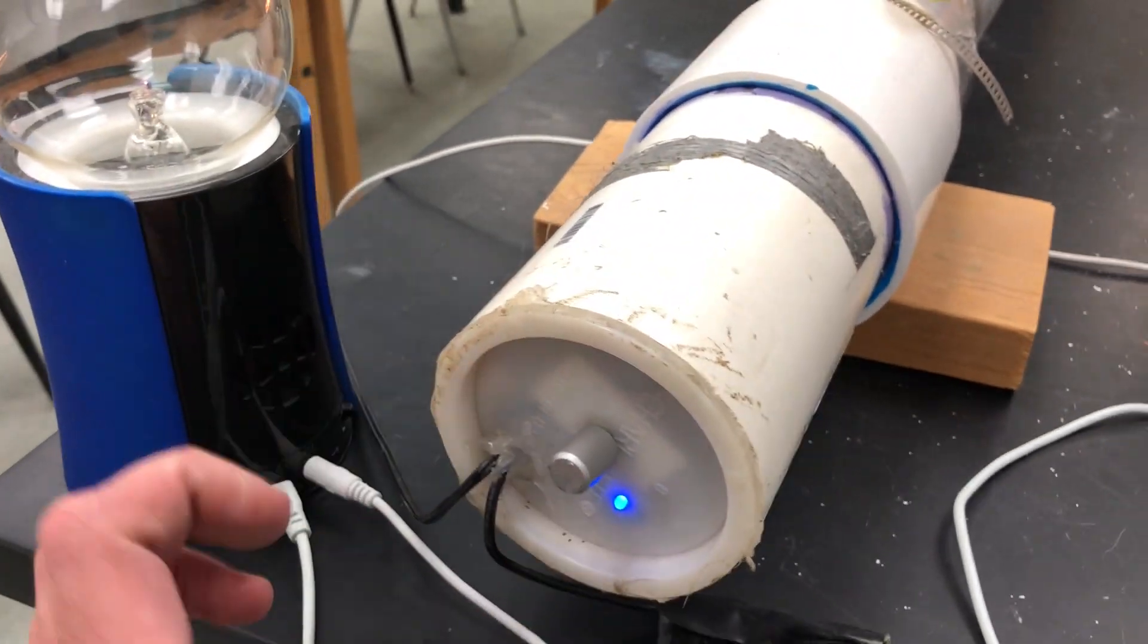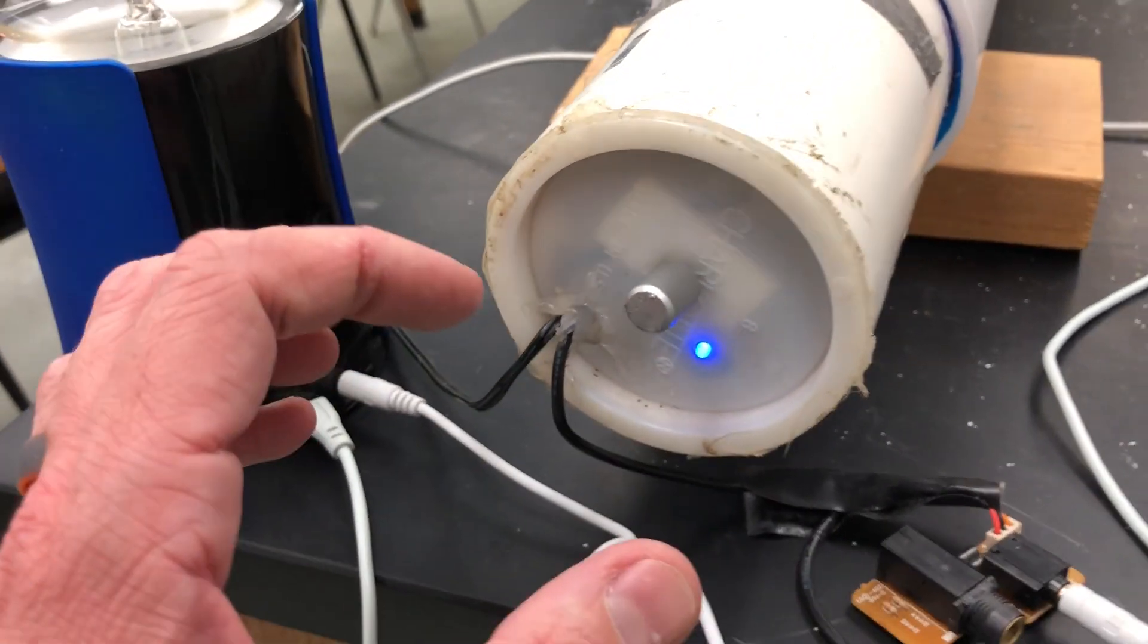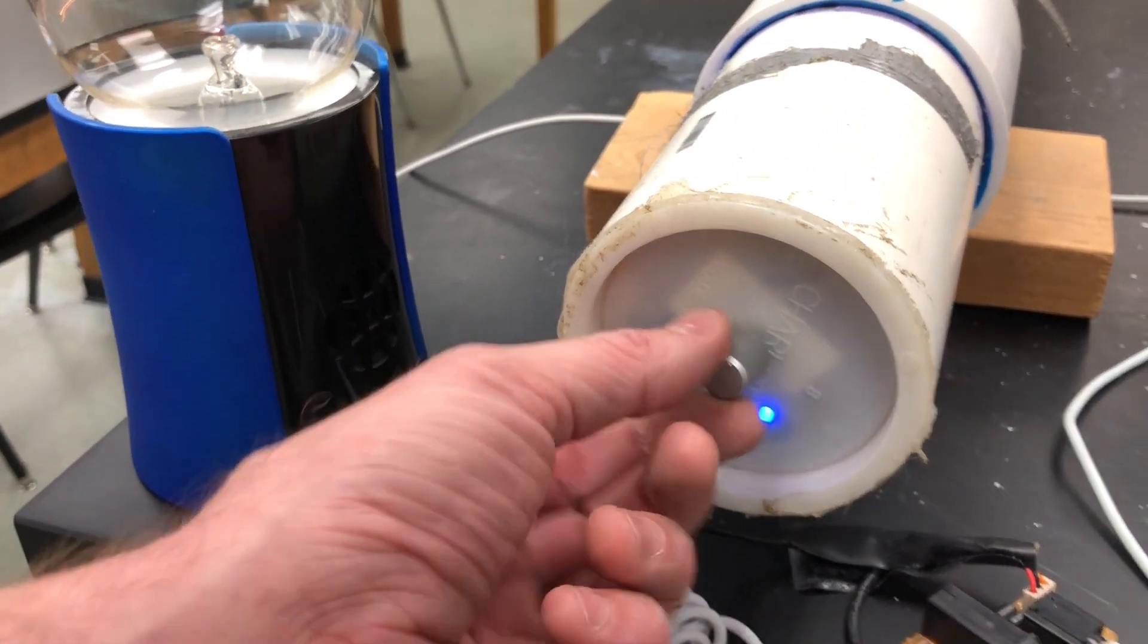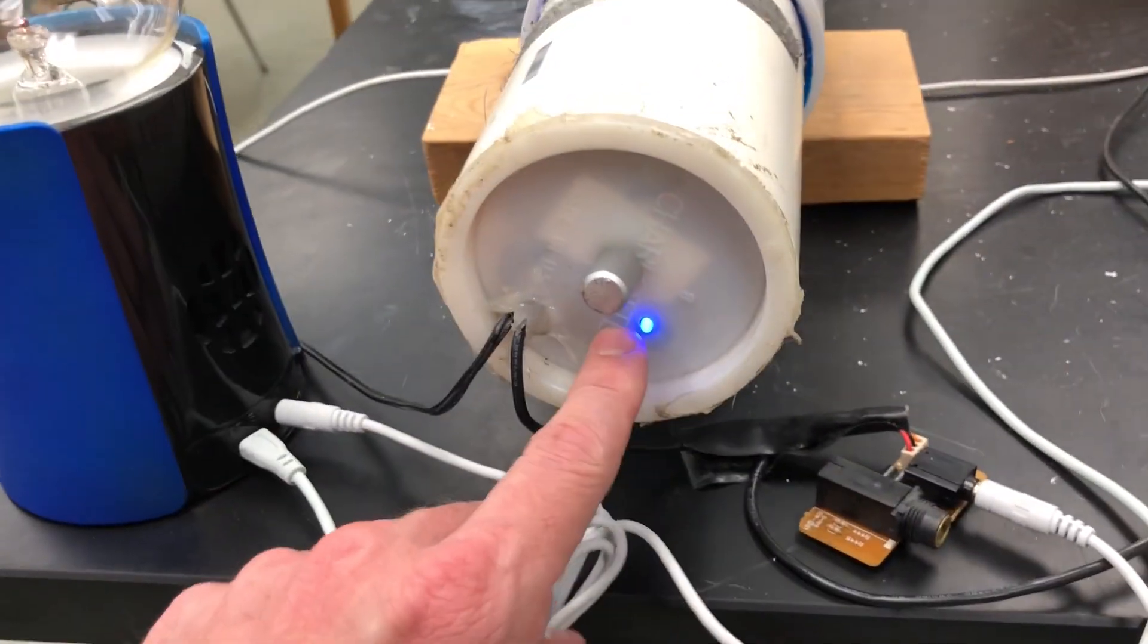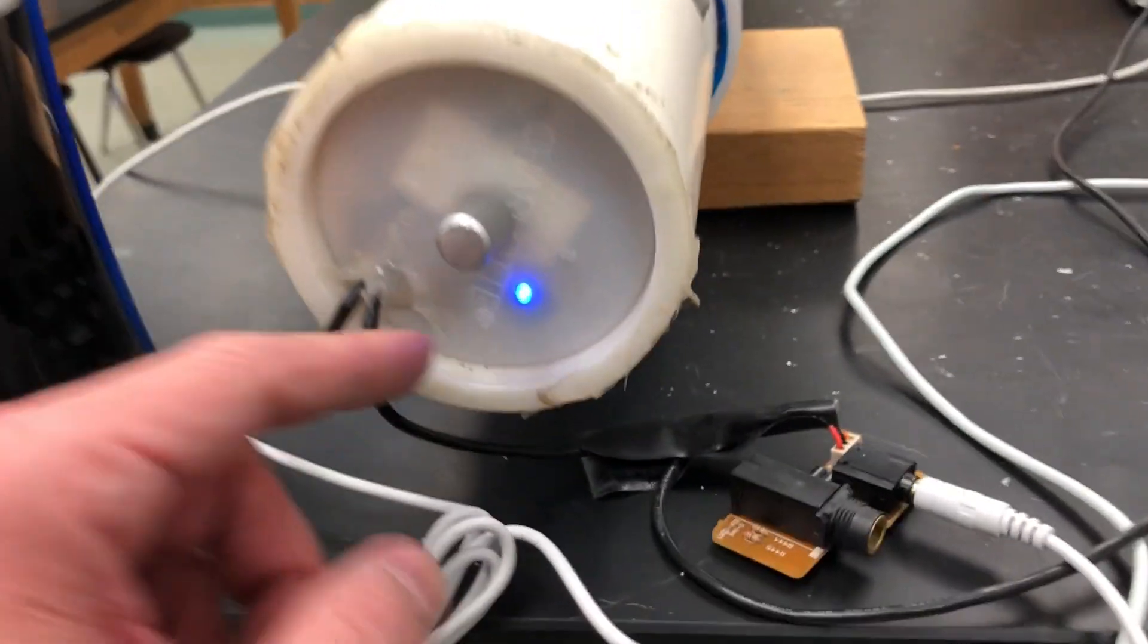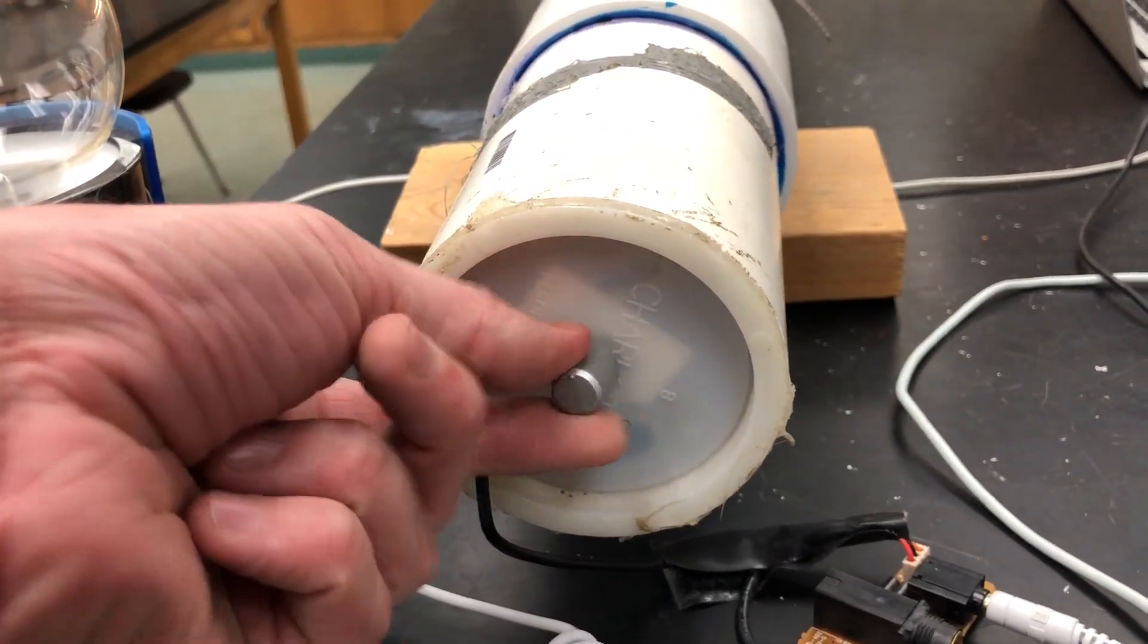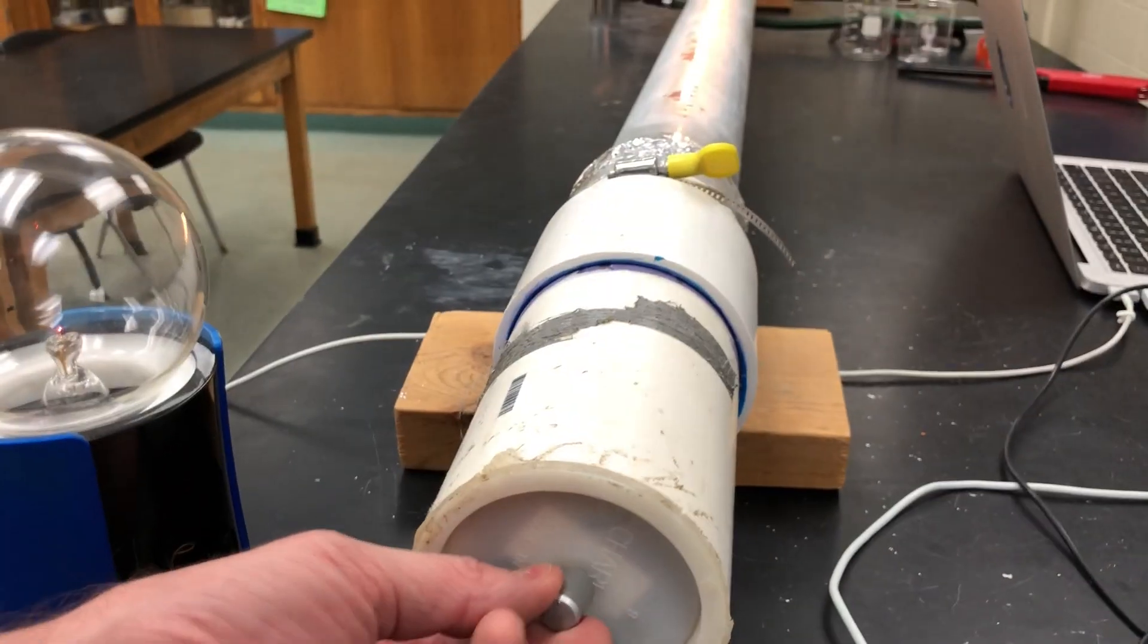And then on this side we've got a speaker inside this PVC tube here. The speaker was ripped out of a computer and it's got a little volume knob attached to it and its own little light that we just put on here. So we can turn that up and down and when it's off the light goes off, so that's cool.